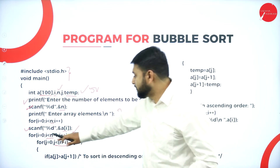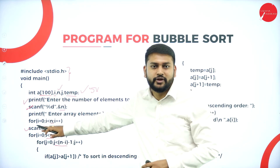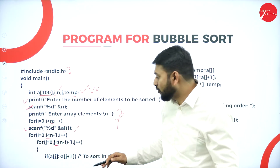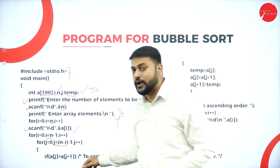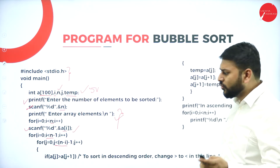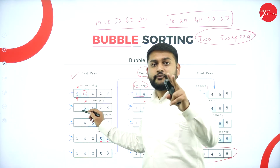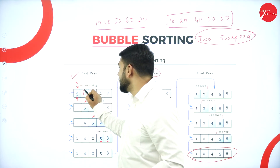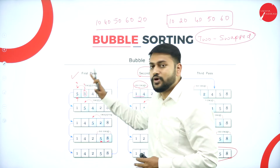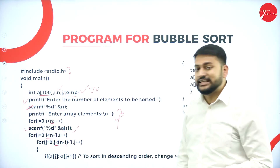This part is very important for bubble sort — the logic of the loops. The outer for loop runs n minus 1 times. Inside, the inner loop runs while j is less than n minus i minus 1. The variable i tracks the number of passes, and j is for comparing adjacent elements in the inner loop.